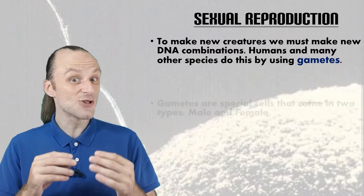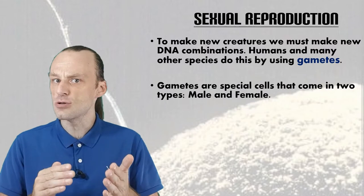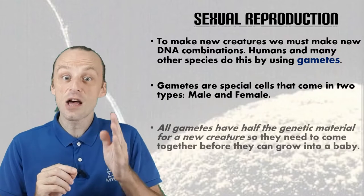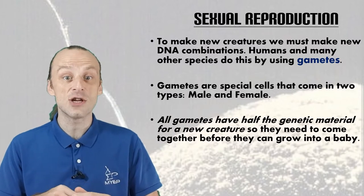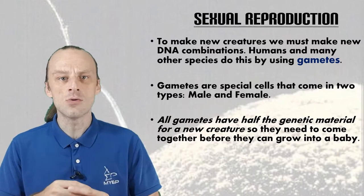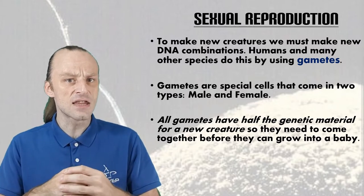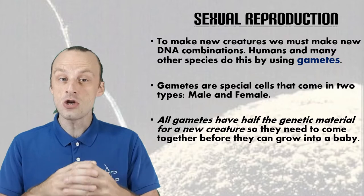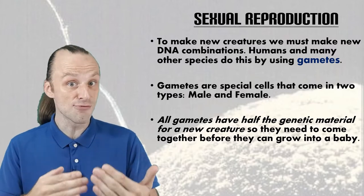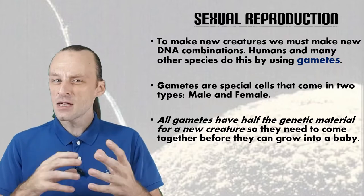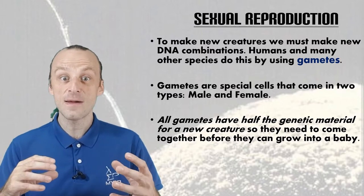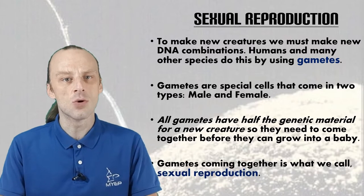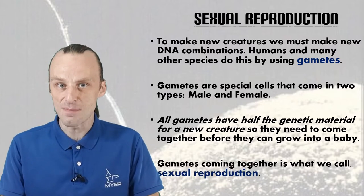Gametes are special sex cells and they come in two different types: male and female. Each gamete contains half of the genetic information that is needed for a new organism, and when two gametes come together from a male and a female, they create the first cell of a new organism with a brand new genetic combination. This process of the male and female gametes coming together and then developing into a new organism is what we call sexual reproduction.